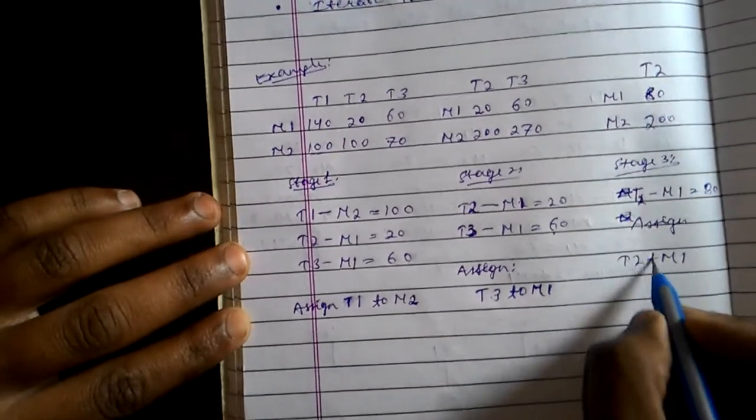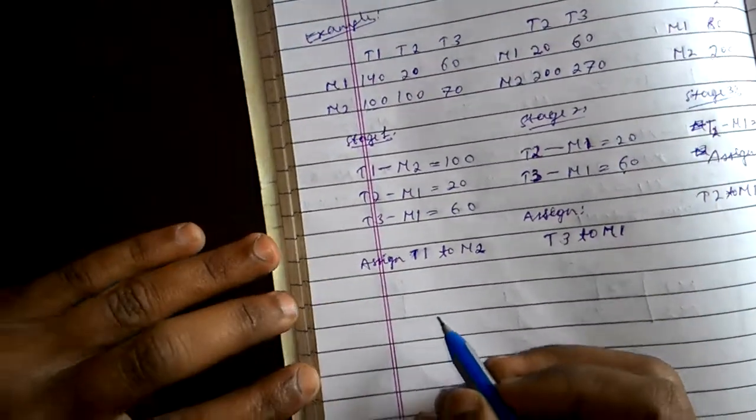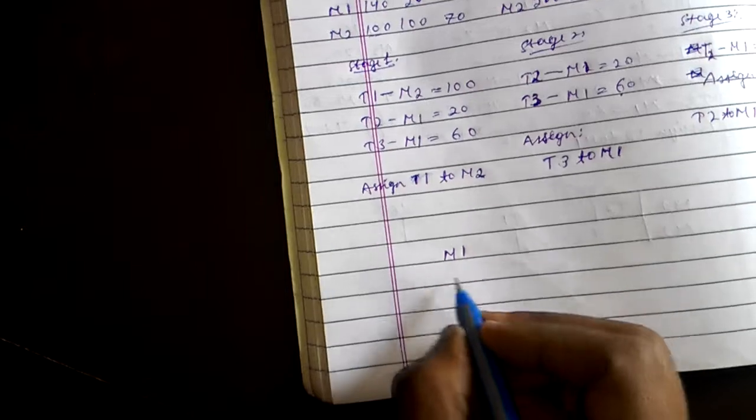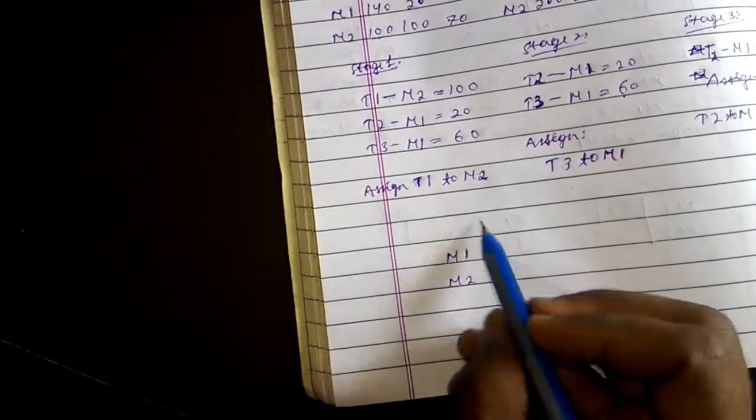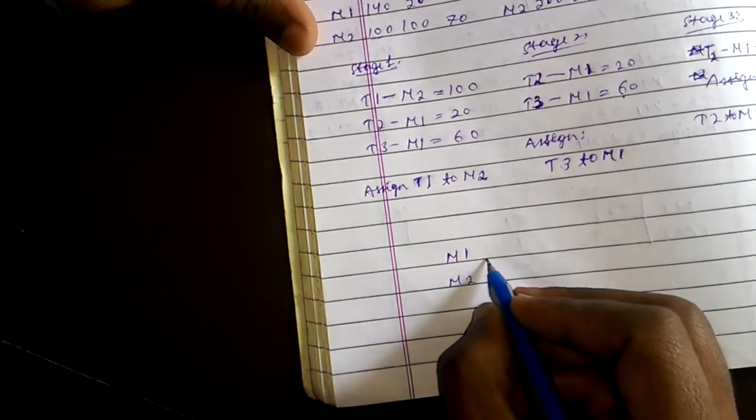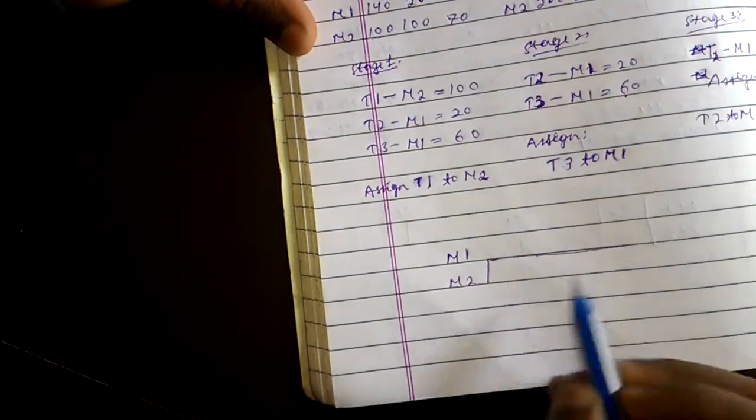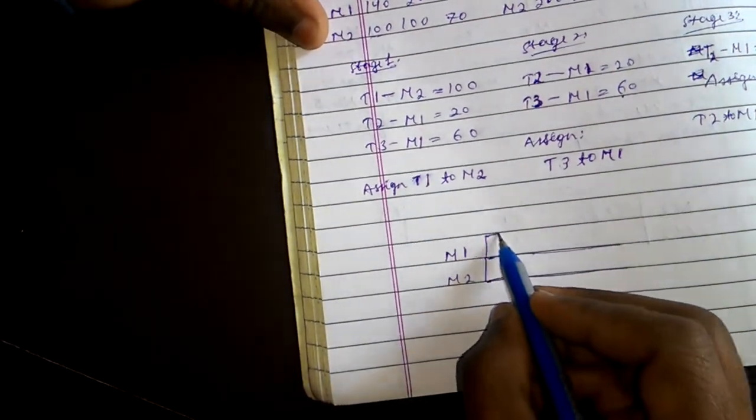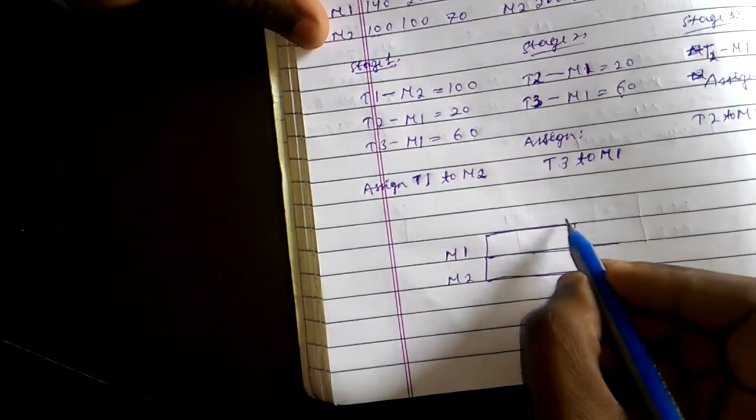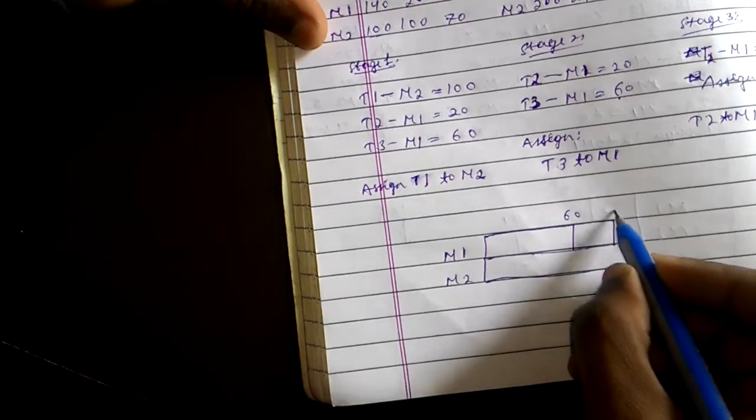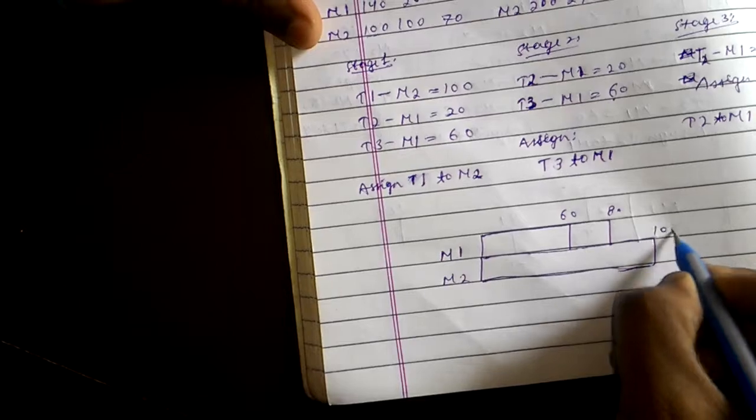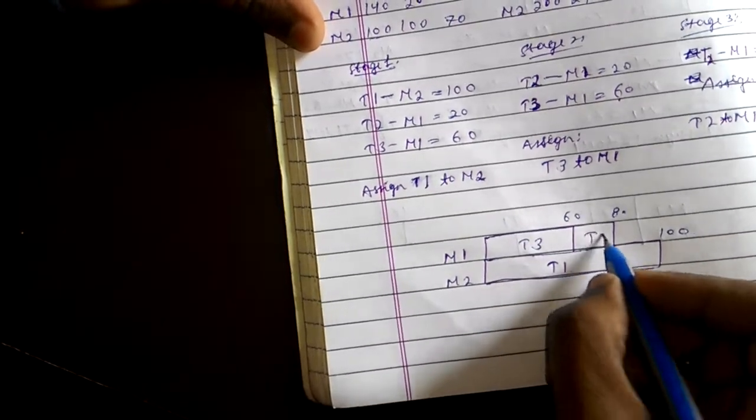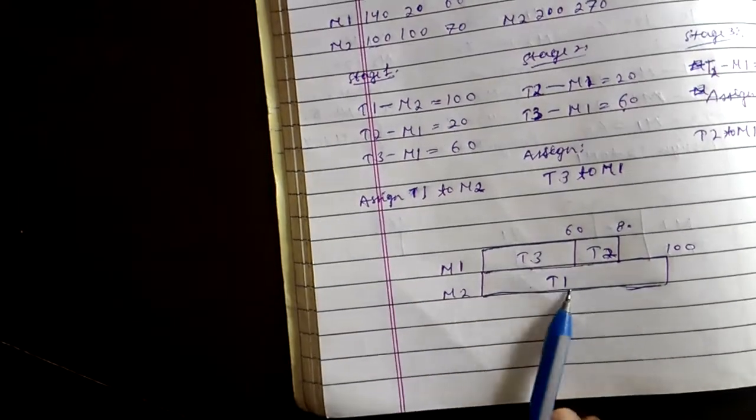Now we'll make a scheduling chart for this. M1, M2: first you see that t1 comes to m2 for time 100, we'll design it later. T3 comes to m1 for time 60 and t2 for 80. 60 comes approximately here, then 80 comes over here, 100 comes over here. T1, 60 was for t3, here comes t2. So this was the scheduling task for machines m1 and m2 according to their completion time.